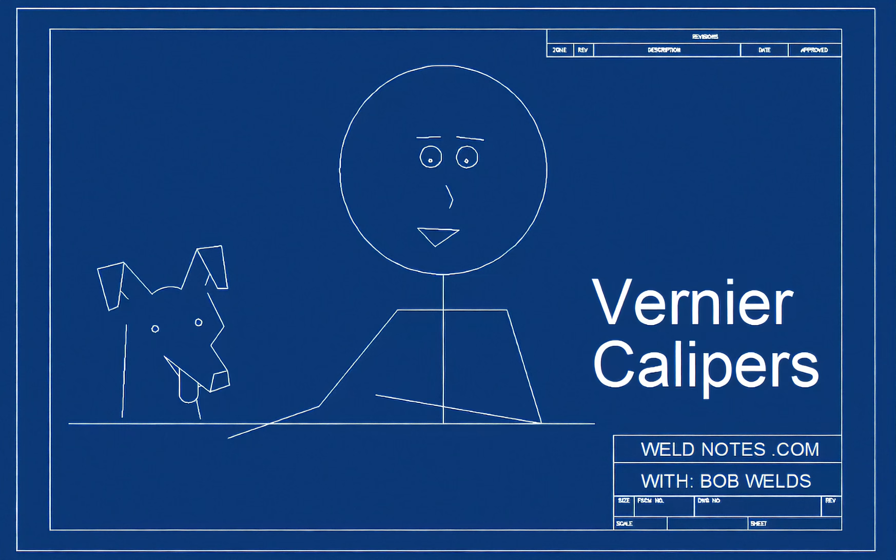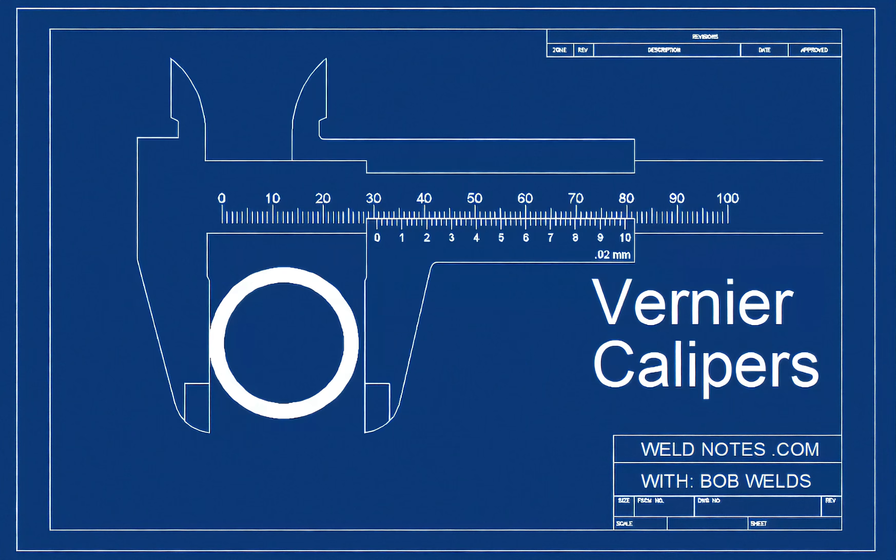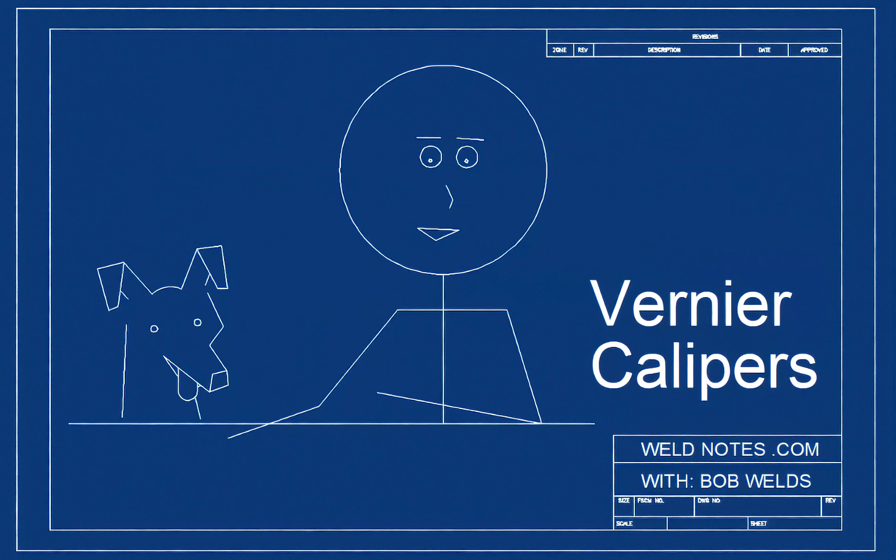Hi, I'm Bob Welds and this is how to read a metric vernier caliper. There are different kinds of vernier scales designed to do different jobs, but they all work pretty much the same way.